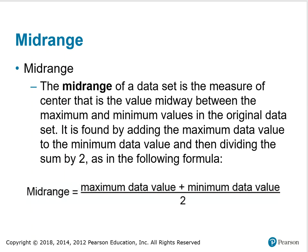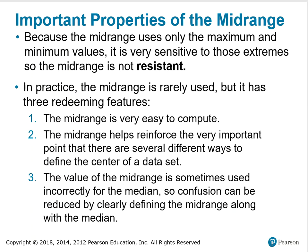And the last measure of center that we're going to calculate is called the midrange. The midrange of a data set is the measure of center that is the value midway between the maximum and minimum values in the original data set. It's found by adding the maximum data value to the minimum data value and then dividing the sum by two, as in the following formula: Midrange equals the sum of the maximum and minimum data values divided by two. Important properties of the midrange: Because the midrange uses only the maximum and minimum values, it is very sensitive to extremes, so the midrange is not resistant. In practice, the midrange is rarely used, but it has three redeeming features. It's very easy to compute. The midrange helps reinforce the very important point that there are several different ways to define the center of a data set. And the value of the midrange is sometimes used incorrectly for the median, so confusion can be reduced by clearly defining the midrange along with the median.